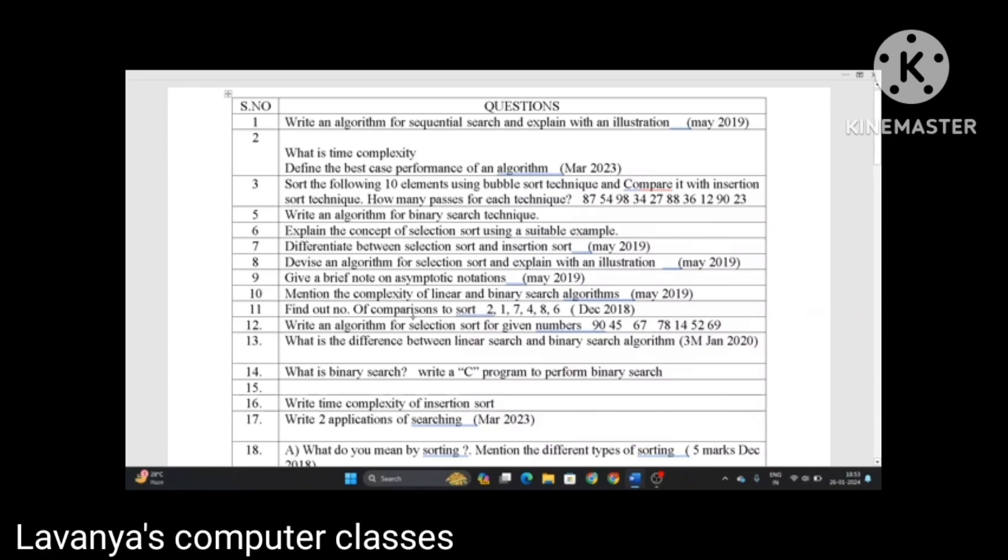Find out number of comparisons to sort 2, 1, 7, 4, 8, 6, December 2018. Next one is write an algorithm for selection sort for given numbers: 20, 90, 45, 67, 78, 14, 52, 69.